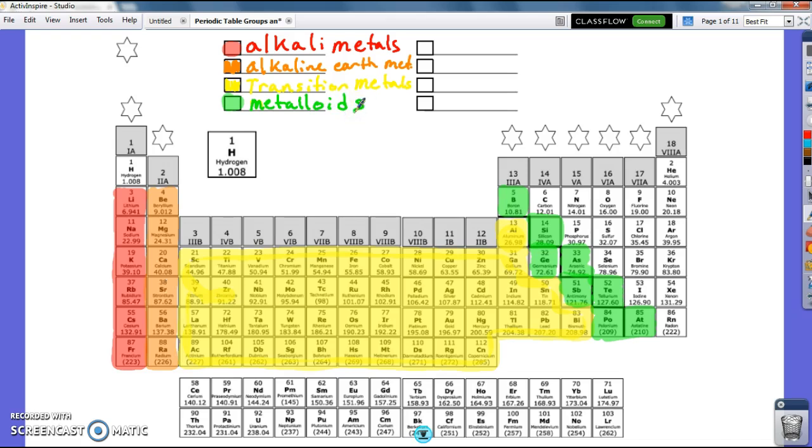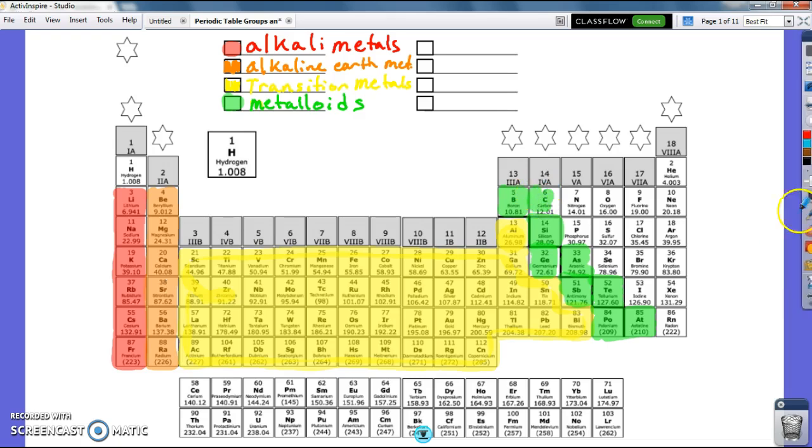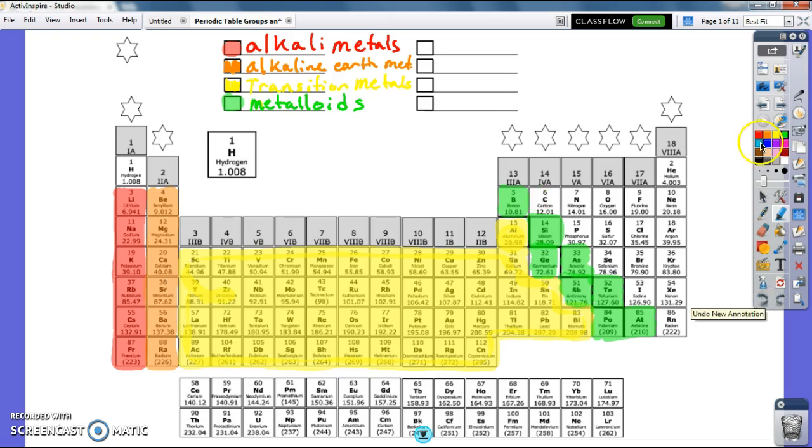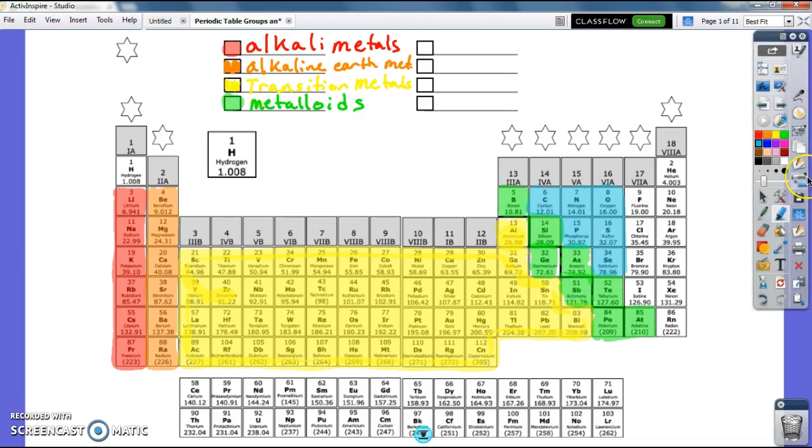Now our next groups are a little bit smaller. We've got a little bit fewer things over here. Our first one is going to be our non-metals. Our non-metals are these guys right here. I've got carbon and nitrogen and oxygen and selenium and sulfur and phosphorus. So these guys are all my non-metals. My other non-metals have special group names. These are my typical non-metals.